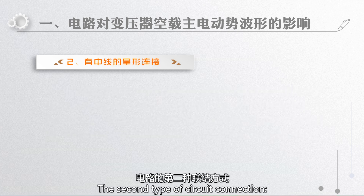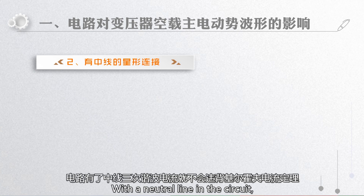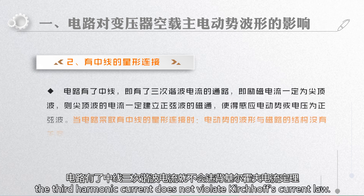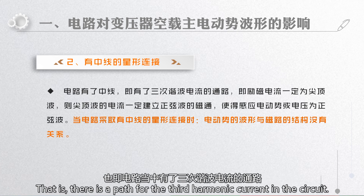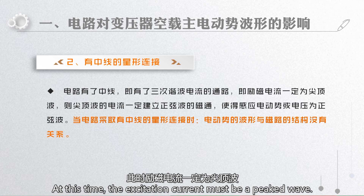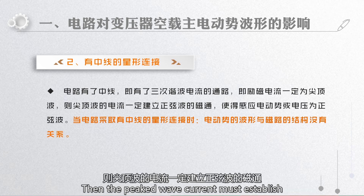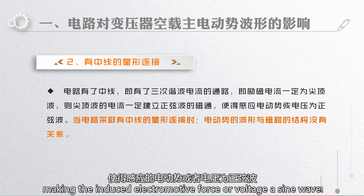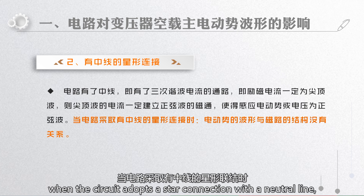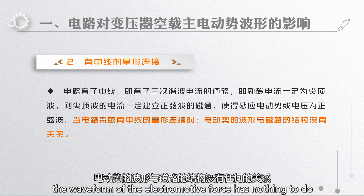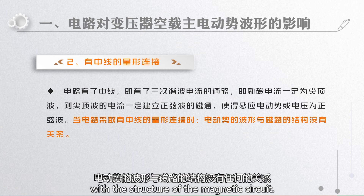The second type of circuit connection is star connection with a neutral line. With a neutral line in the circuit, the third harmonic current does not violate Kirchhoff's current law. That is, there is a path for the third harmonic current in the circuit. At this time, the excitation current must be a peaked wave. Then, the peaked wave current establishes a sine wave magnetic flux, making the induced electromotive force or voltage a sine wave. This conclusion indicates that when a circuit adopts a star connection with a neutral line, the waveform of the electromotive force has nothing to do with the structure of the magnetic circuit.